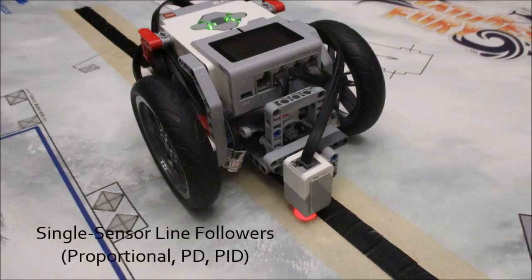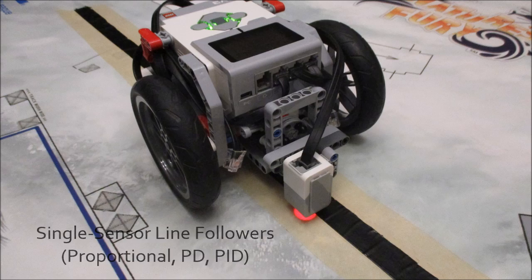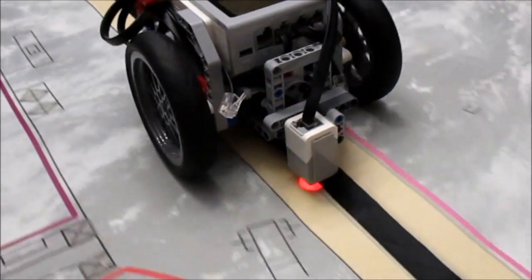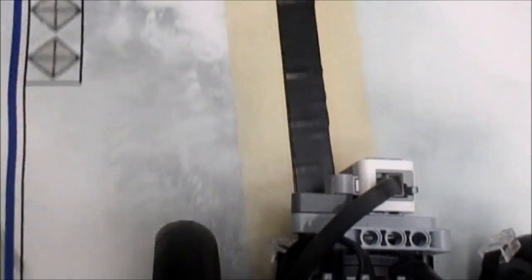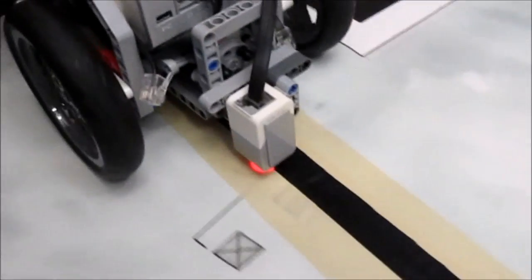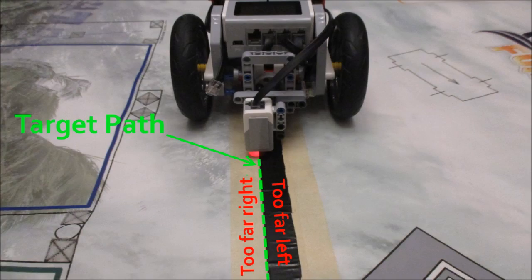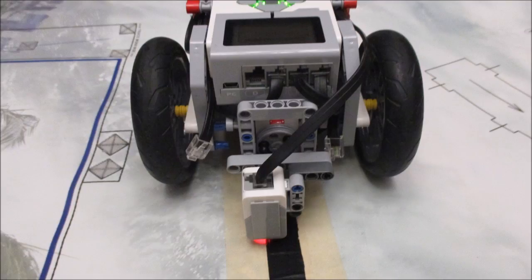Moving on to the particulars of each type of line follower, I'll start with single sensor line followers. This includes proportional or PID line followers. These types aren't very picky about where their sensors are placed, but the one thing to keep in mind is that this type doesn't follow directly above the center of the line. Rather, it follows off to the side, more specifically on the border between the black and white edge of the line.